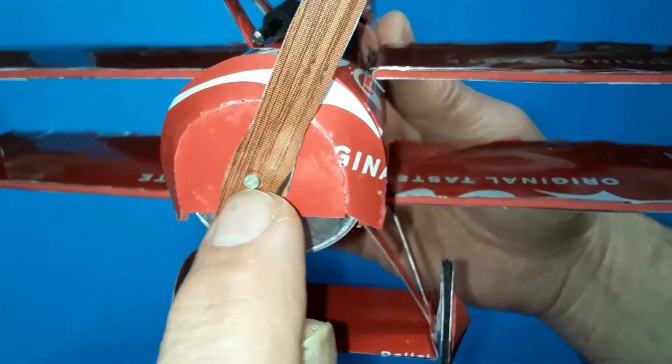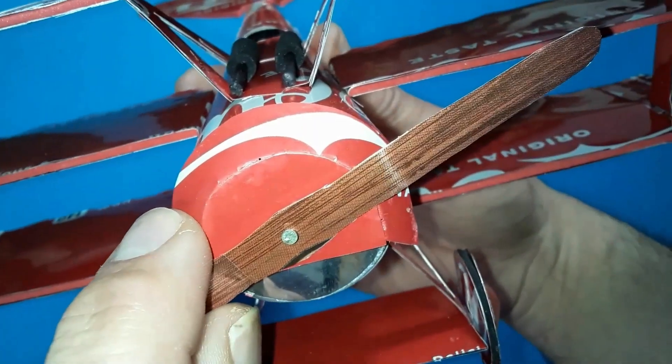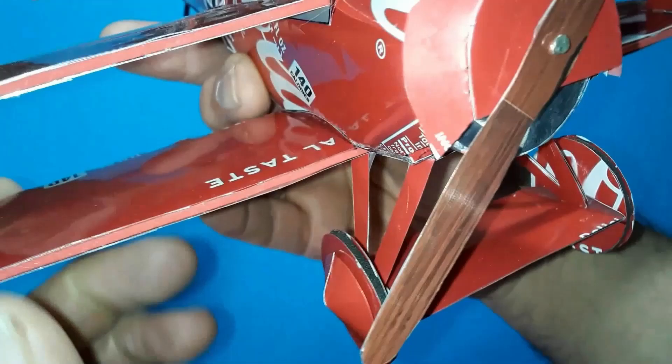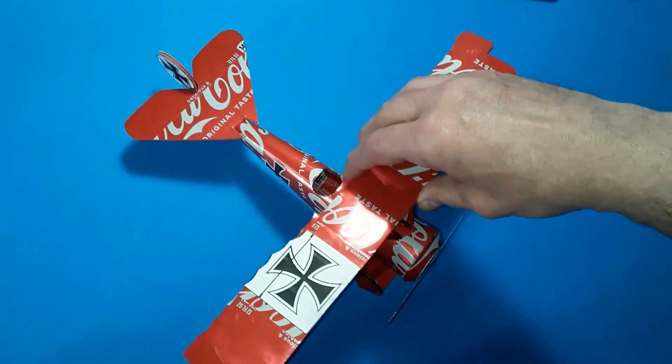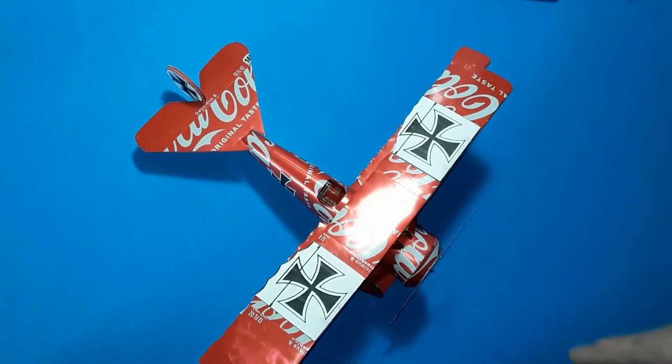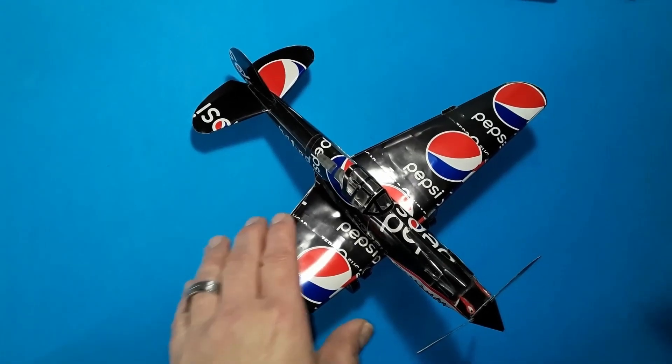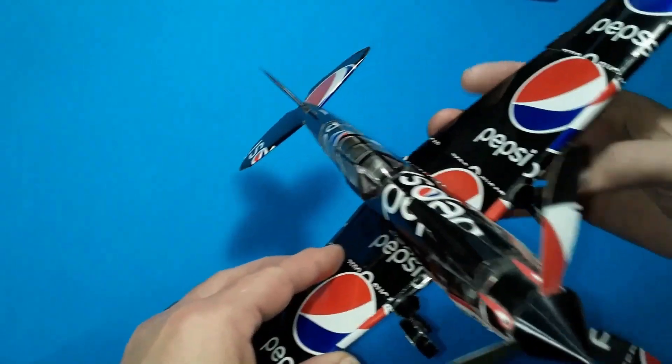And how about this propeller crafted out of A&W root beer cans? See how we use the wood grain pattern to simulate a classic World War I propeller? Heck, it even spins too. Much better than opting for radio control plane parts, don't you think? Next,